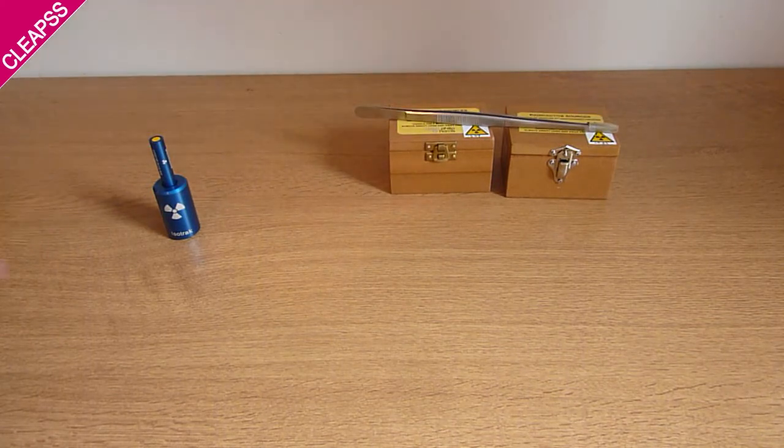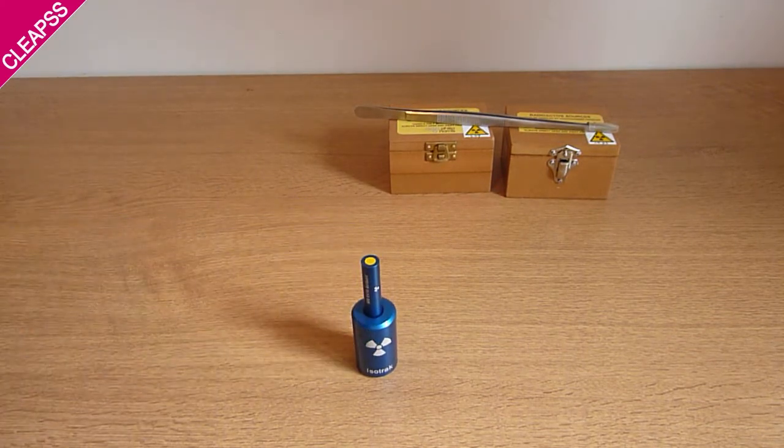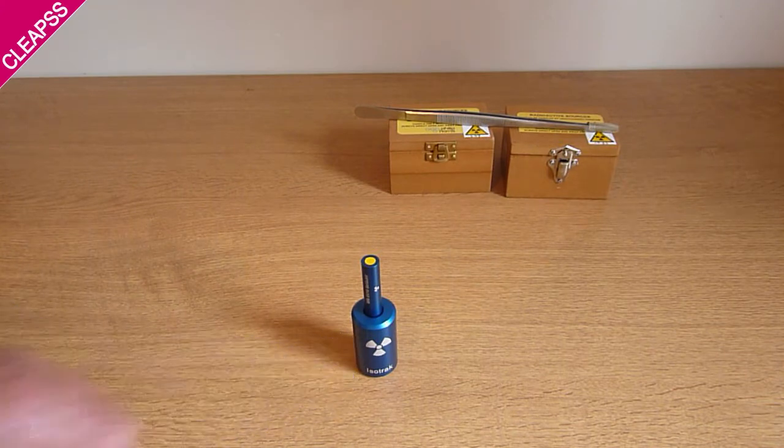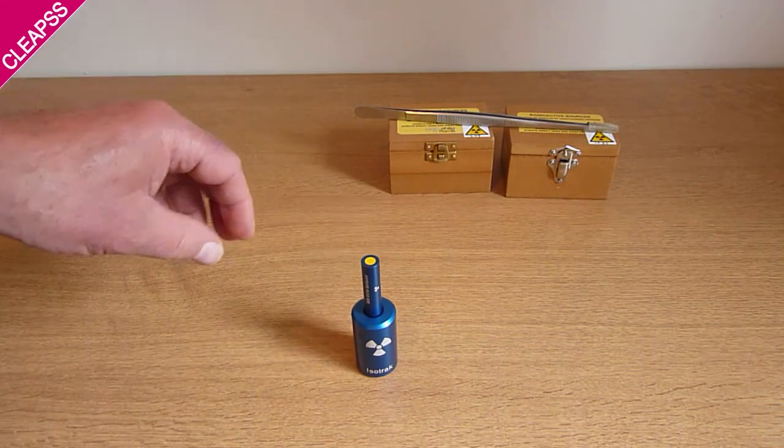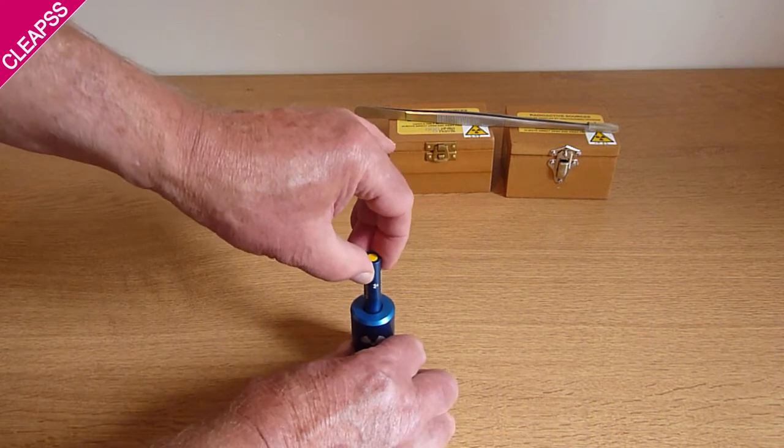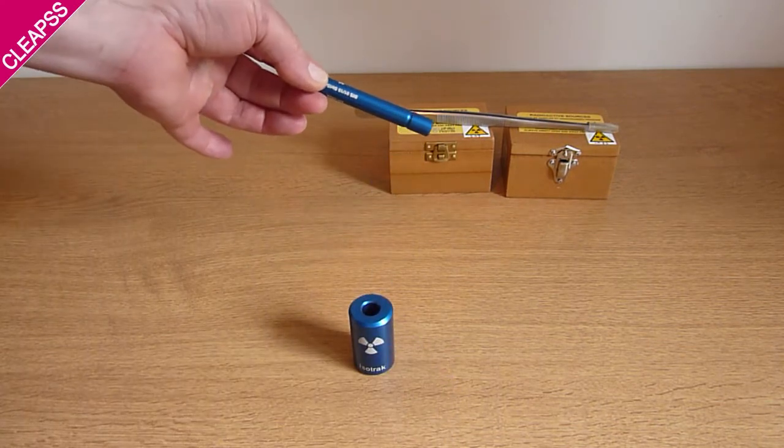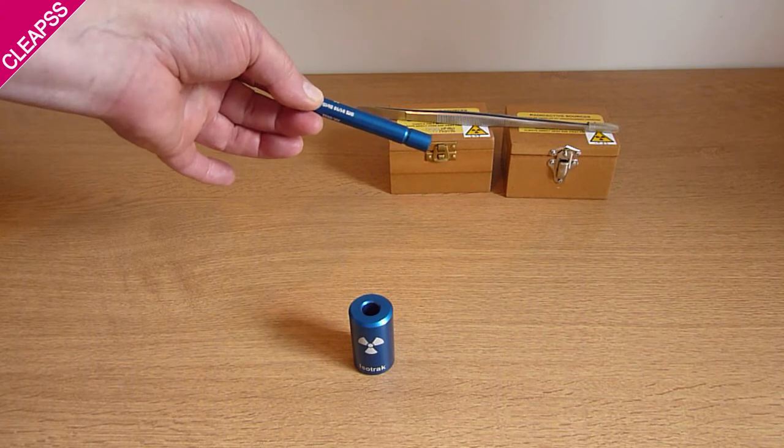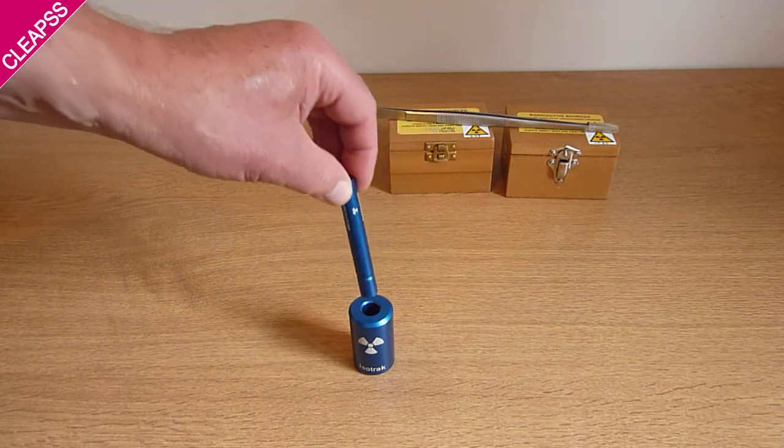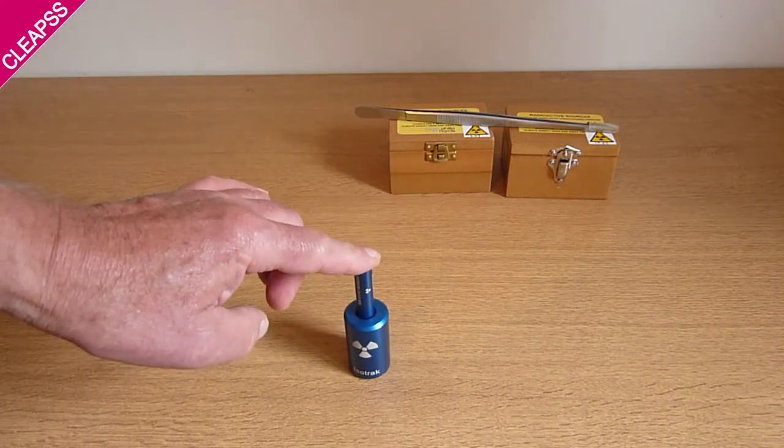Now the Isotrack source, a different design - it's an aluminium shield with a rod inside. To access the source, take it out. And this is designed to be held by hand, not with forceps. And you finish with it back into its shield, click in place.